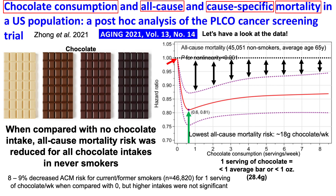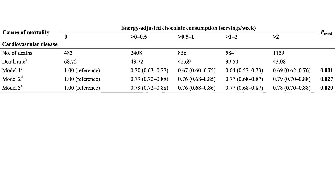Cause-specific mortality was also reduced, not just all-cause mortality risk. Starting with cardiovascular disease mortality — when comparing people who didn't eat any chocolate as the reference and then looking at higher intakes up to half a serving, half to one serving, one to two servings, and greater than two servings per week — all intakes above zero, regardless of the model (less adjusted model 1, model 2, or fully adjusted model 3), were associated with a significantly reduced cardiovascular disease mortality risk.